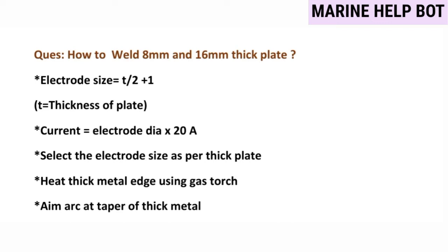For the welding procedure: first, select the electrode size as per the thicker plate; second, heat the thick metal edge; and third, aim the arc at the taper part of the thick metal. This formula is taken from the welding manual and is accepted by many surveyors. Whenever asked about welding two different thickness plates, give this answer.